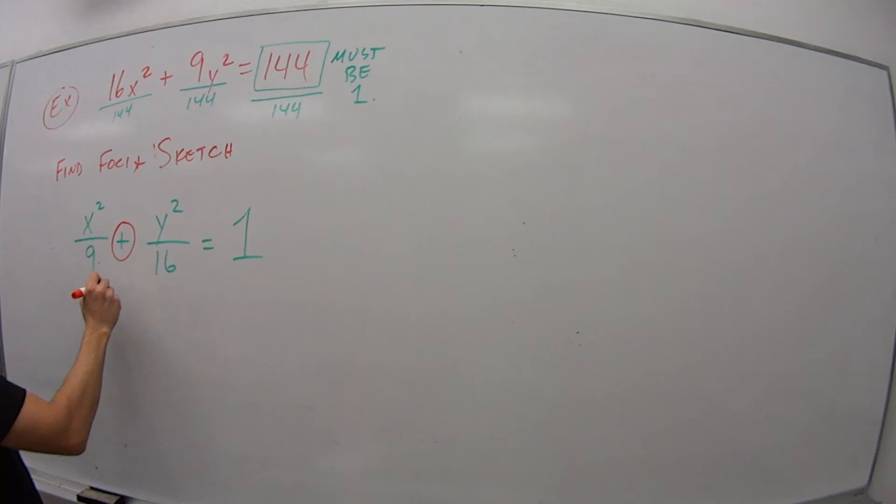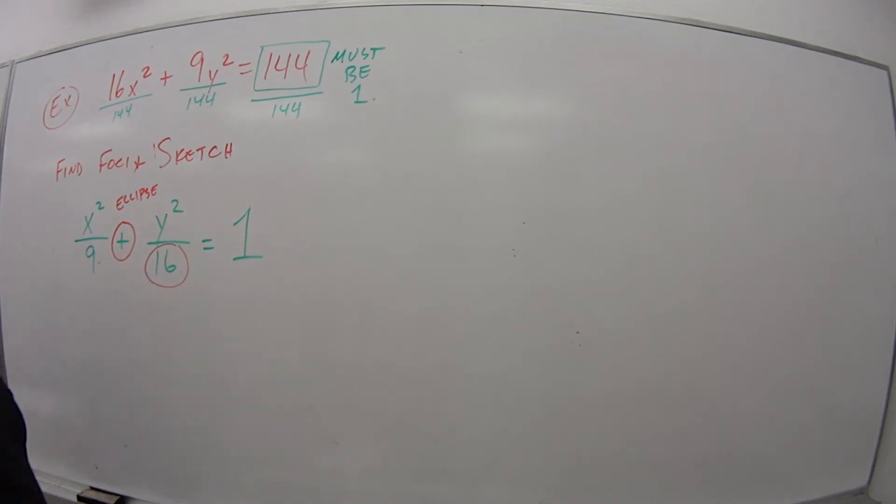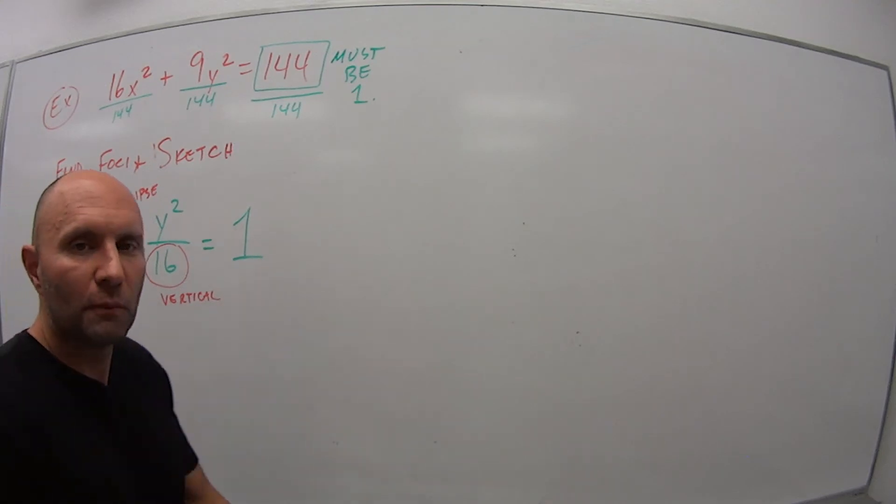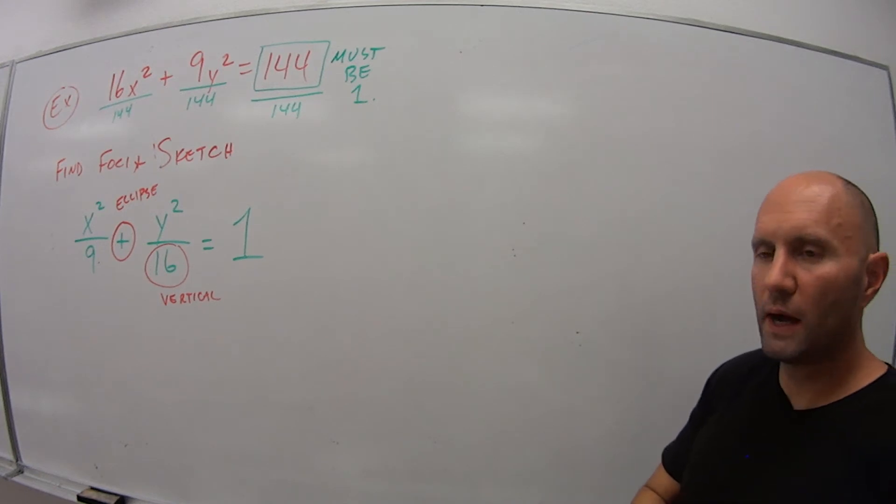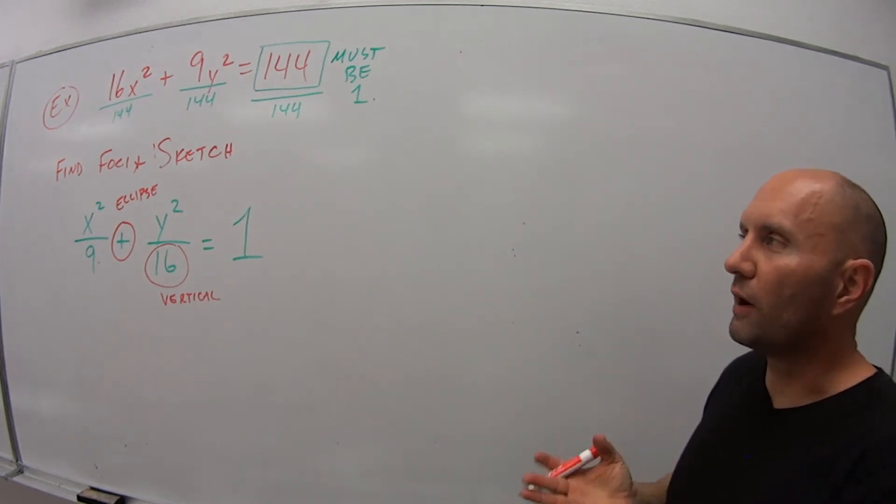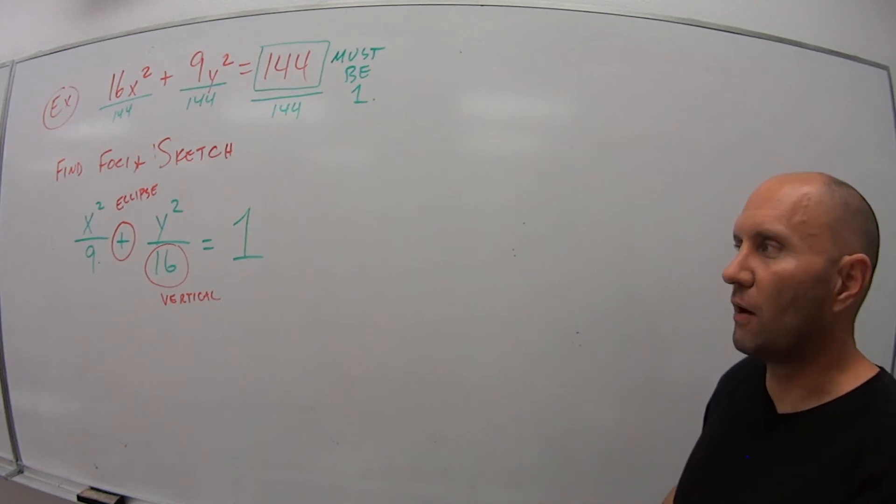Now I'm going to look. This is a plus sign. That means it's an ellipse. The bigger number is under the y. So because it's under the y, that tells me it's a vertical ellipse. That's as much help as I'm going to give you. Go ahead, pause the video. Try to find the foci. Try to sketch this out. You probably have to figure out the a and b, so you know the widths and lengths of the minor axis, major axis. Pause it, come on back, and we'll work it through.